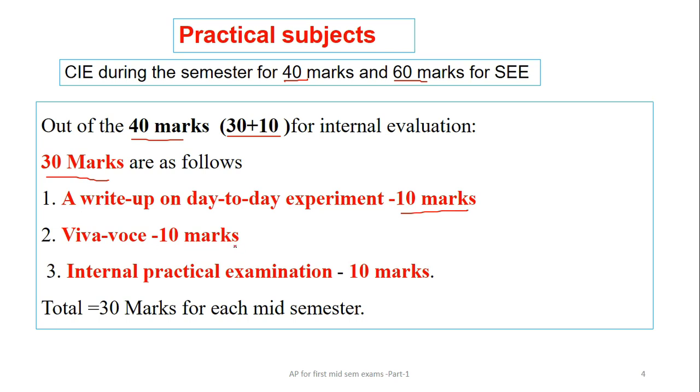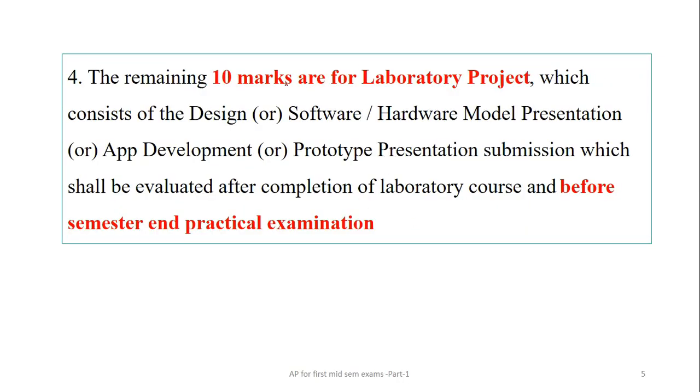Viva voce, so based on your experiment, there will be a viva voce and along with it, any other experiment can be asked, you have to prepare all the experiments in order to answer the viva voce questions. Then test will be there, internal practical examination test, this is for 10 marks only. So this write up 10 marks and viva voce 10 marks and internal practical exam 10 marks, so total it will carry 30 marks for each mid semester. There will be 2 mids, so we will get 60, we will take average, so it will be reduced to 30 marks. Now the remaining 10 marks will be taken before the semester end examination.